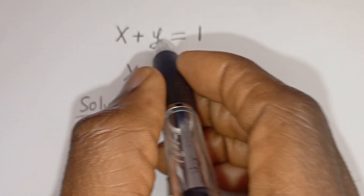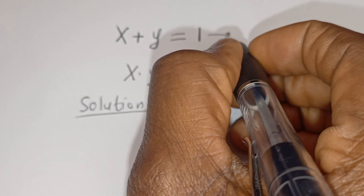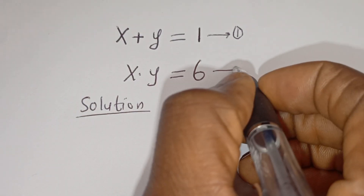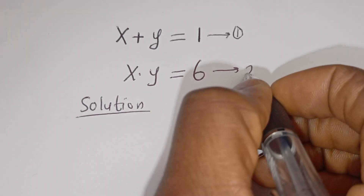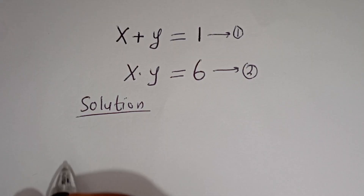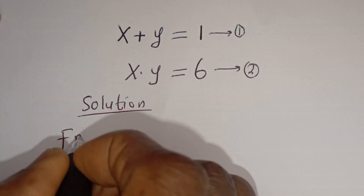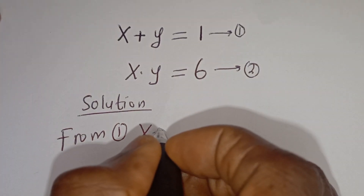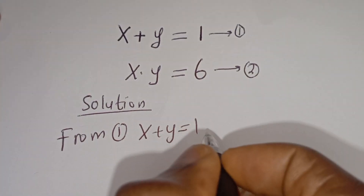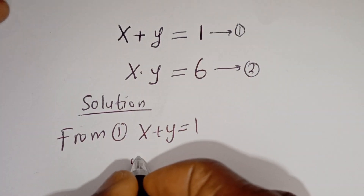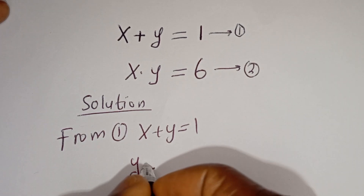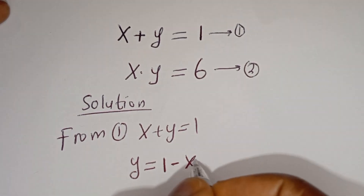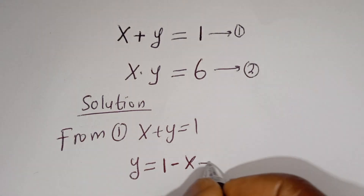We have x plus y is equal to 1 — let's call this equation 1. xy is equal to 6 — let's call this equation 2. From equation 1, x plus y is equal to 1, then y is equal to 1 minus x. Let's call this equation 3.